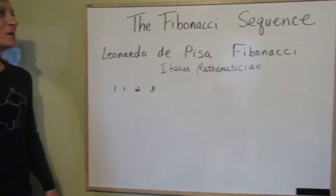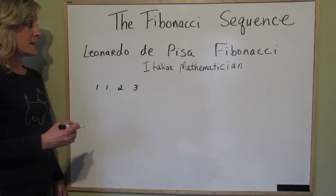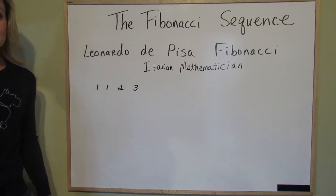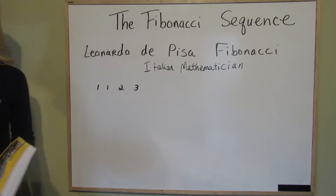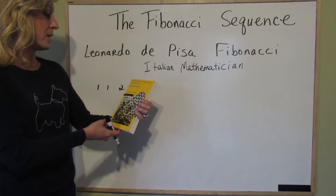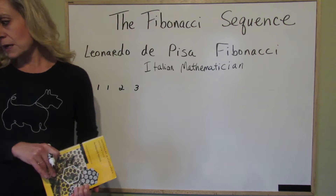The Fibonacci sequence was brought to us by an Italian mathematician whose name is Leonardo da Pisa Fibonacci. This sequence was discovered in nature — it was discovered through the reproduction of rabbits. You can also refer to the golden ratio. I want to cite my source, which is 'Secondary Mathematics Instruction' by Farrell and Farmer. There's a little bit about the Fibonacci sequence in there and I've always enjoyed studying this.